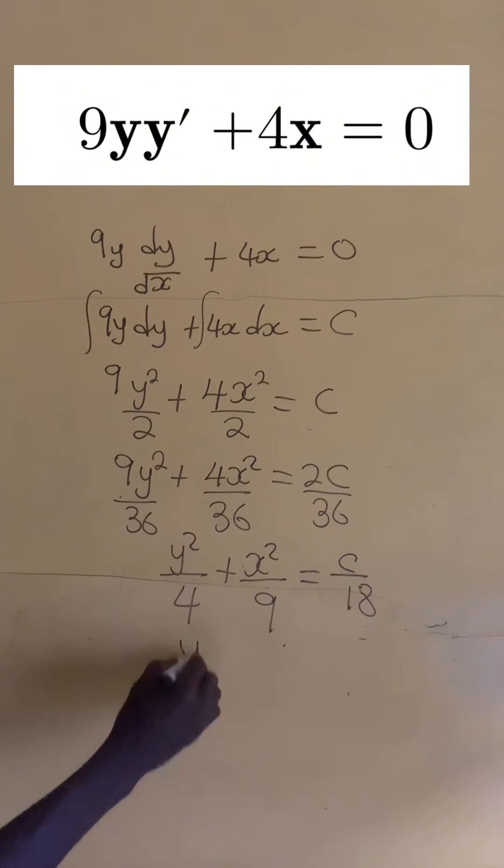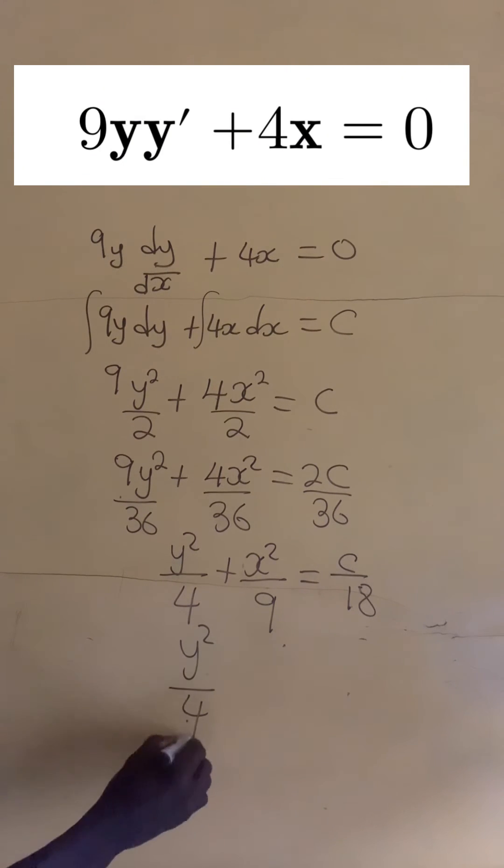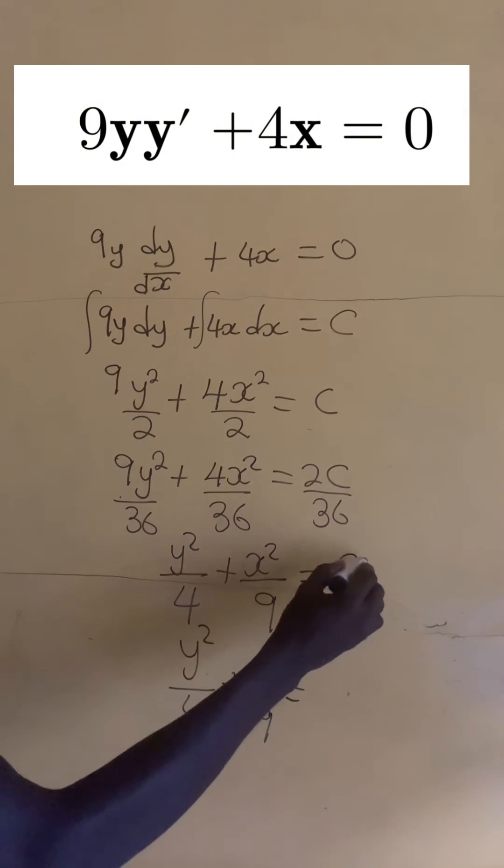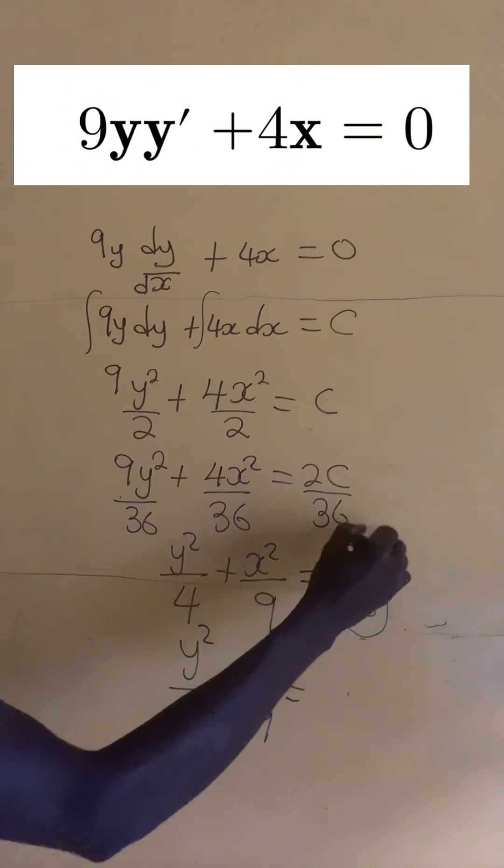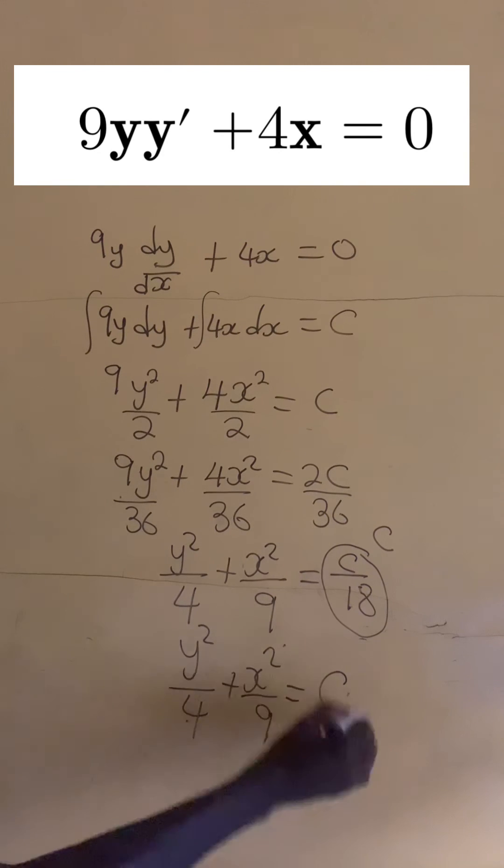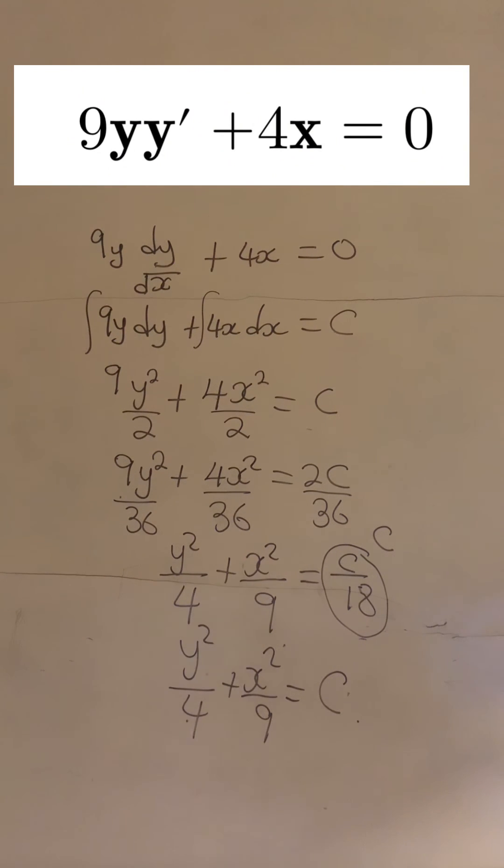So here we write y squared divided by 4 plus x squared divided by 9 equals C, because a constant divided by a constant is still a constant. So we replace capital C to represent small c divided by 18.